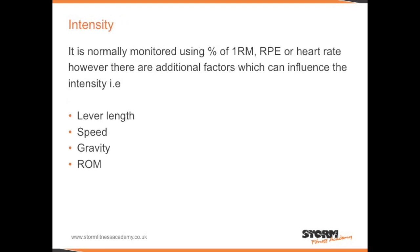Intensity: this is normally monitored using a percentage of 1 repetition max, RPE, or heart rate. However, there are additional factors which can influence the intensity. For example, lever length — generally, when we increase the lever length, we increase the difficulty of an exercise. During a lateral raise, if we carry out the exercise with straight arms, the lever is longer, which makes the exercise more challenging. If we bend the elbows to 90 degrees, that shortens the lever and makes the exercise easier.